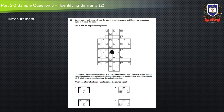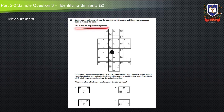Now let's look at this example of a measurement identifying similarity question from the selective thinking skills exam. Earlier today, I spilled some ink onto the carpet of my living room and had no success trying to remove the stain. This is how the carpet looks at present.